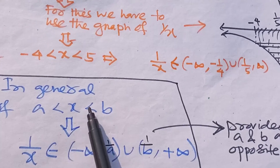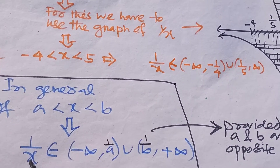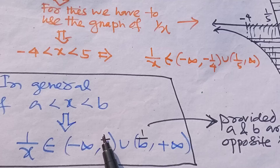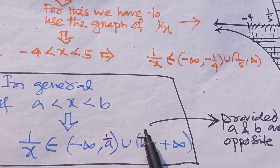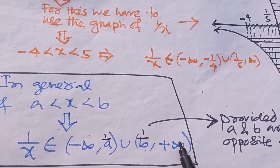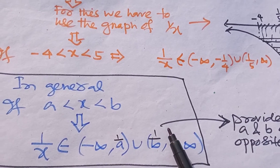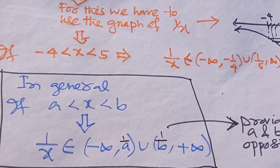So in case of opposite sign, 1/x will belong from -∞ to 1/a, union 1/b to +∞. If both are of the same sign, just reverse the sign of inequality. That's it — thank you for watching this video.